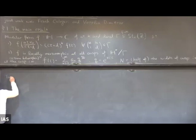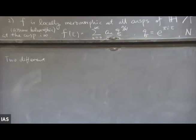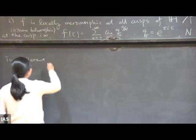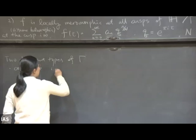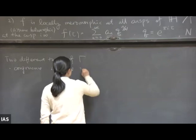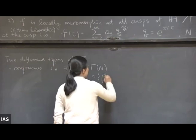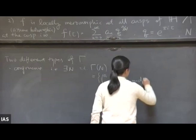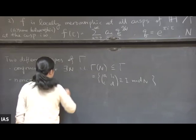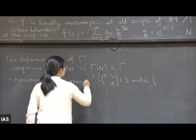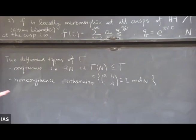We would like to talk about two different types of finite index subgroups gamma. One is called congruence subgroups — namely there exists an N such that the principal congruence subgroup, the matrices congruent to the identity matrix mod N, is contained in gamma. The second type is non-congruence subgroups — they are just the otherwise. The existence of non-congruence subgroups goes back to the work of many people many years ago.